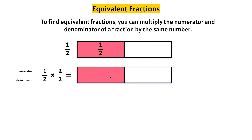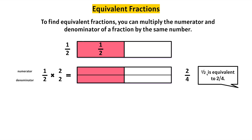Let's count how many are shaded in: one, two. Two-fourths. One times two is two and two times two is four. One-half is equivalent to two-fourths — they hold the same value.